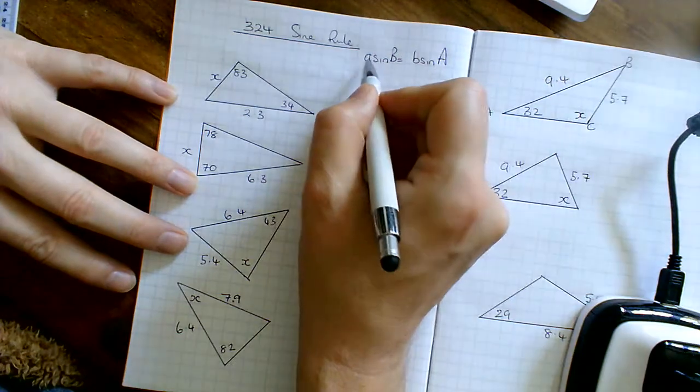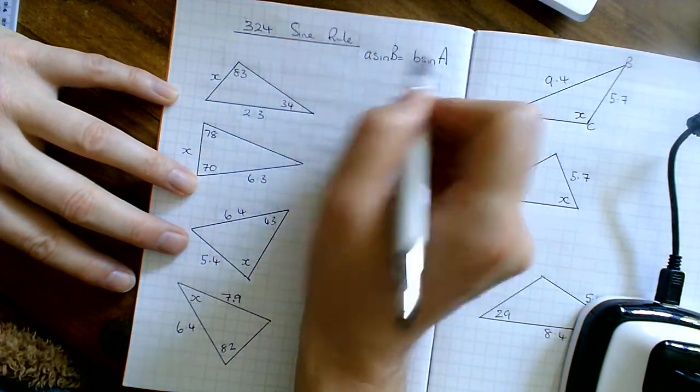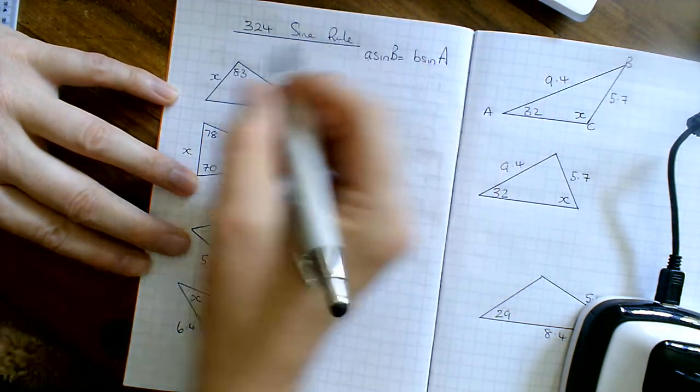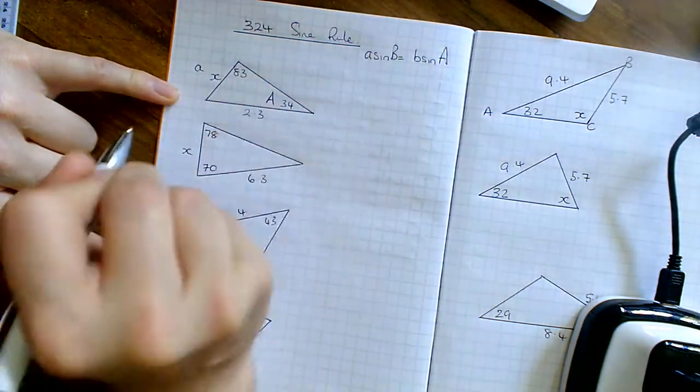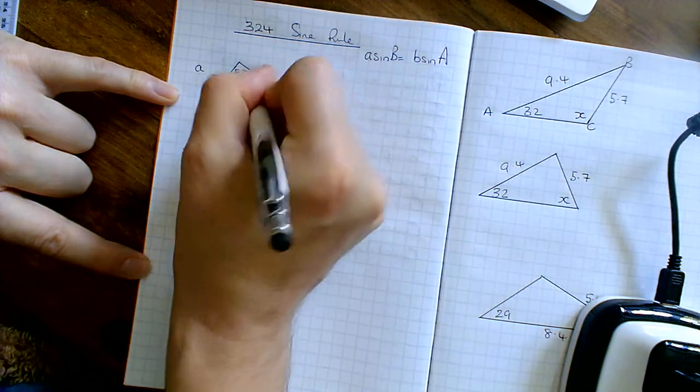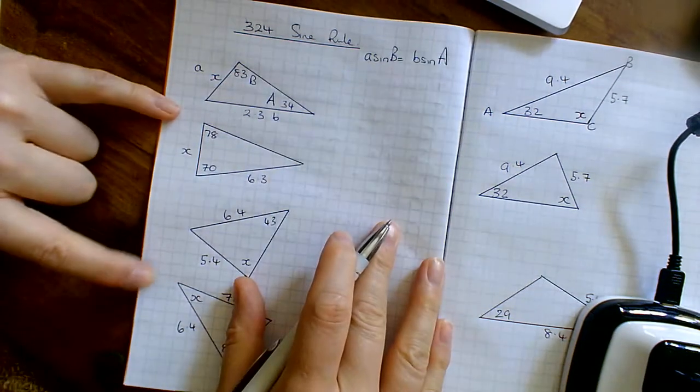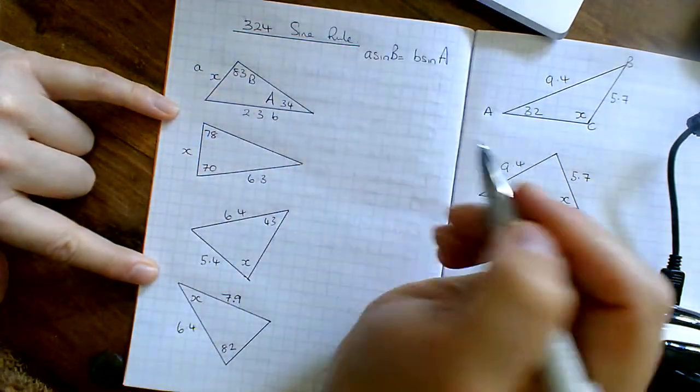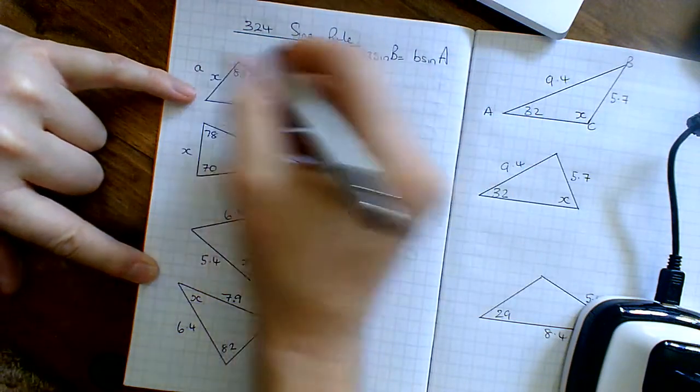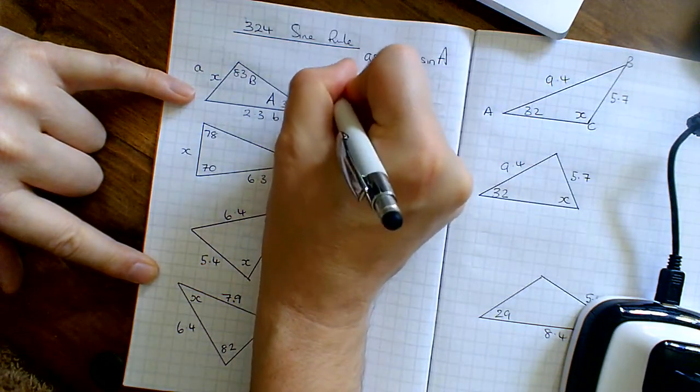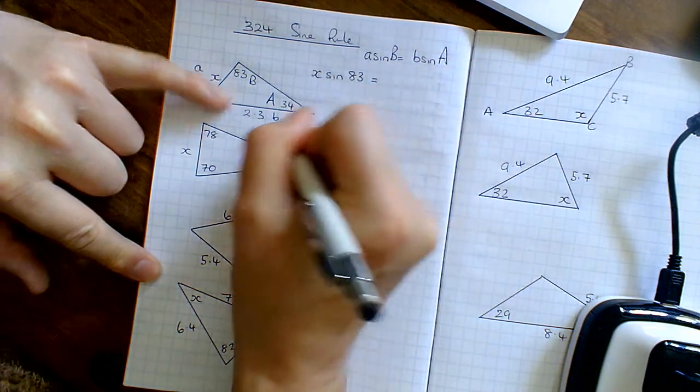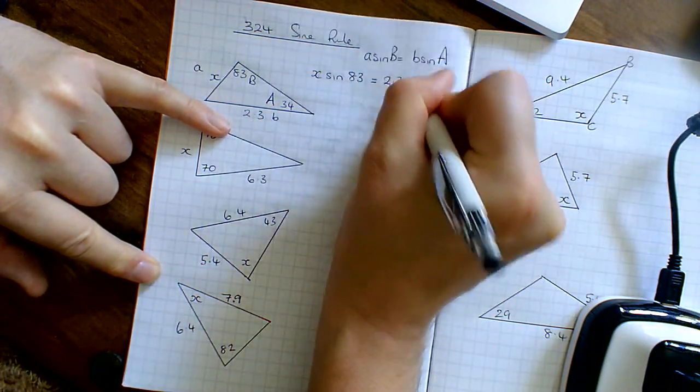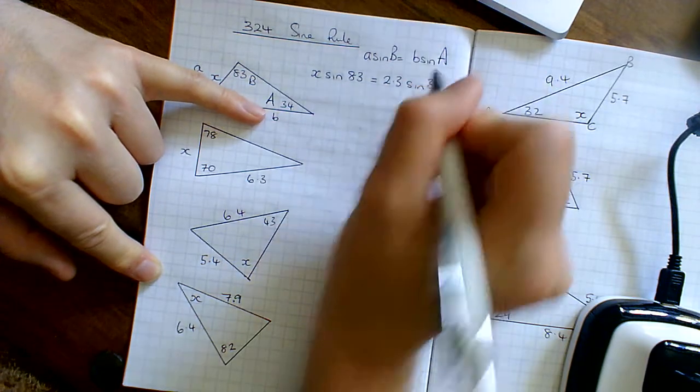So let's label up. A is a side and B capitals are the angles which are opposite. If this is side A, then angle A has to be directly opposite. This is going to be side B and this is going to be angle B. Then I just plug things into the formula. So I've got A which is X, sine B which is 83, equals B which is 12.3, sine A which is 34.